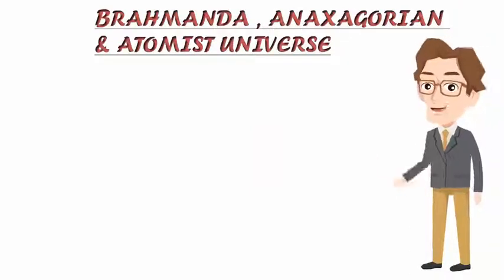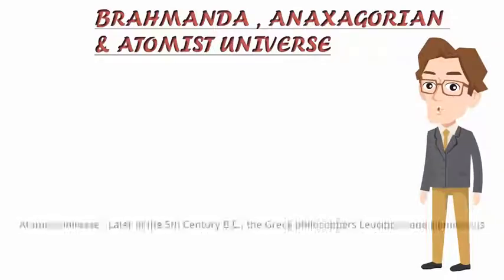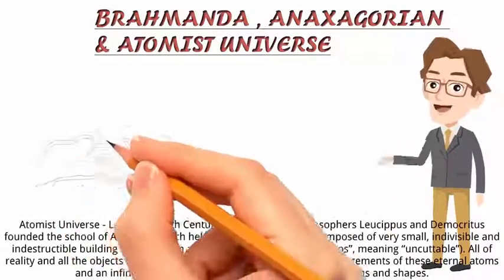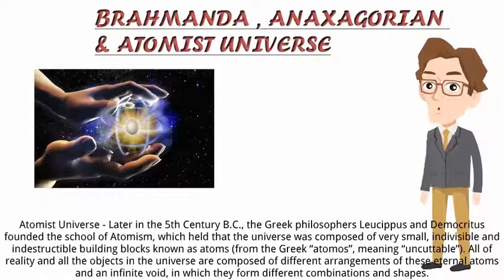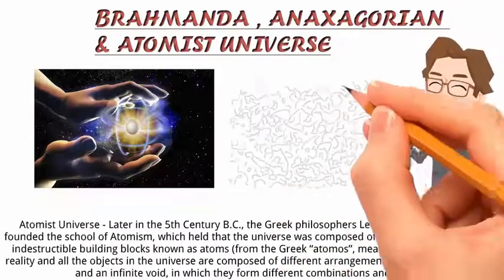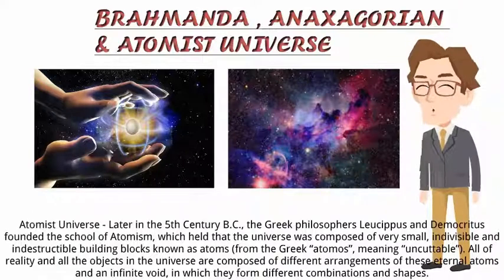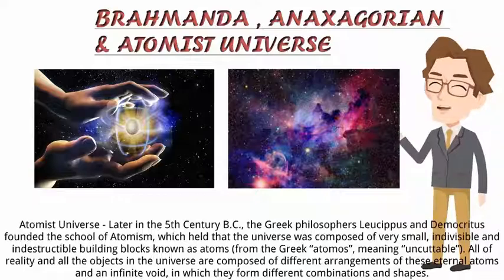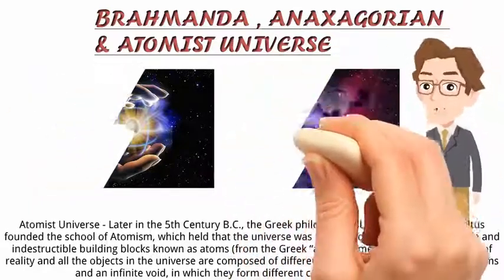Another theory is about the atomist universe. Later in the 5th century BC, the Greek philosophers Leucippus and Democritus founded the school of atomism, which held that the universe was composed of very small, indivisible, and indestructible building blocks known as atoms — from the Greek atomos, meaning uncuttable. All of reality and all objects in the universe are composed of different arrangements of these eternal atoms, and an infinite void in which they form different combinations and shapes.